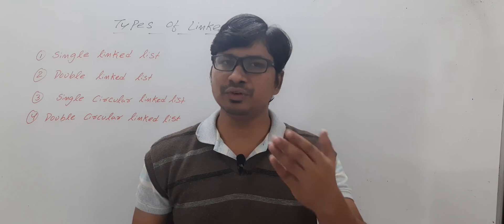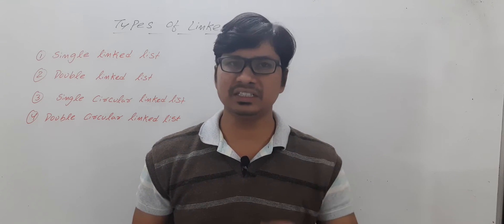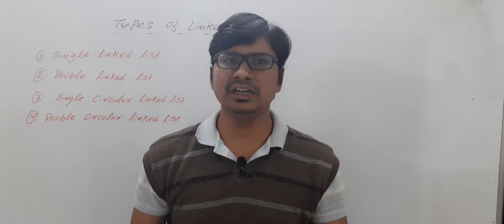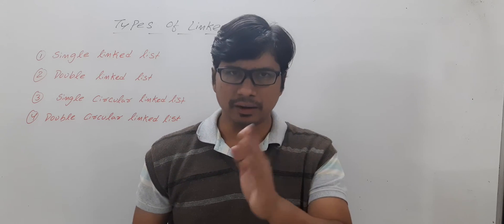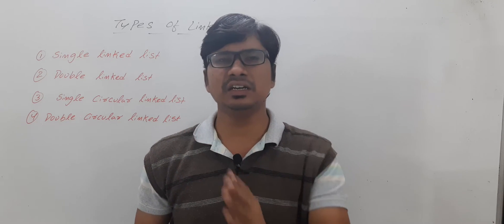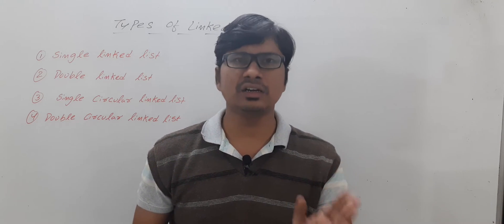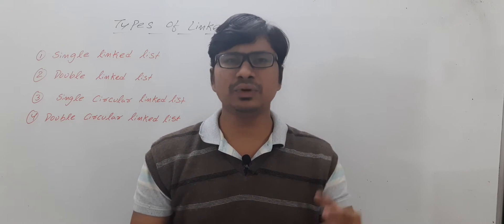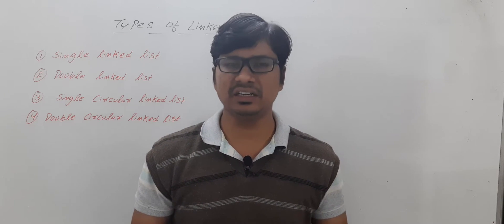Basically, we have four types of linked list: single linked list, double linked list, circular single linked list, and circular double linked list. I will discuss each one in detail.